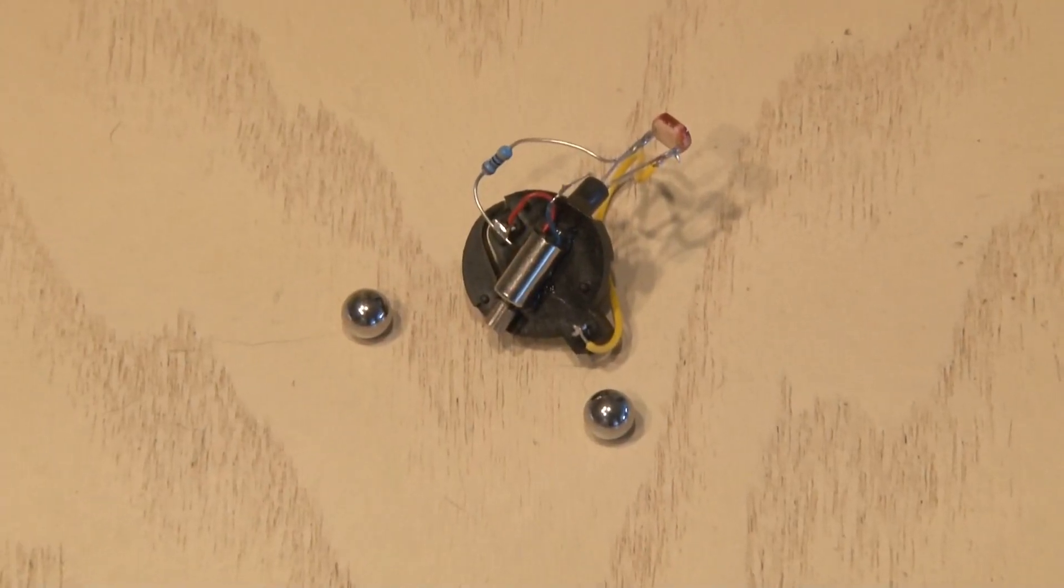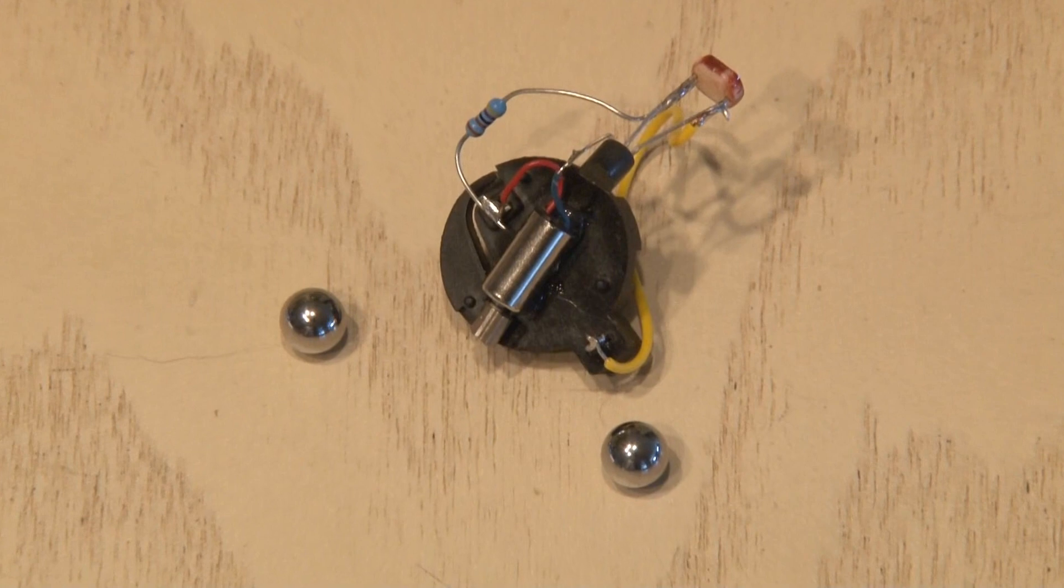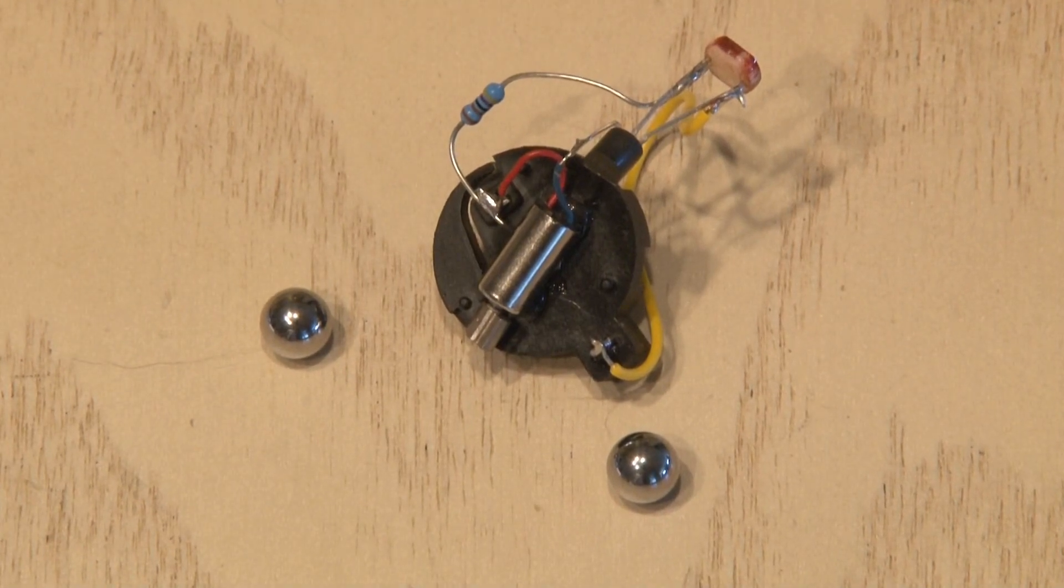The last step is to add two ball bearings. You can find ball bearings in all kinds of things: bicycles, DVD players, washing machines, fans.